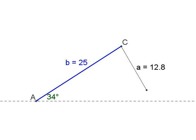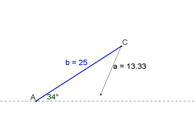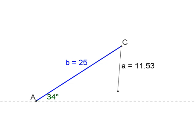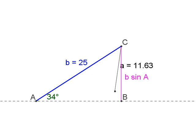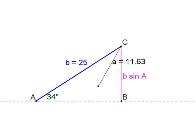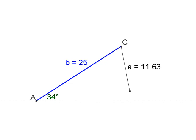What if little a were bigger? As I increase it, I'm almost at the point where it reaches the ground. We can use right triangle trig to figure out exactly how long it needs to be. If you look at the right triangle formed with the pink leg, b times the sine of angle A gives you that minimum length needed to reach the ground.